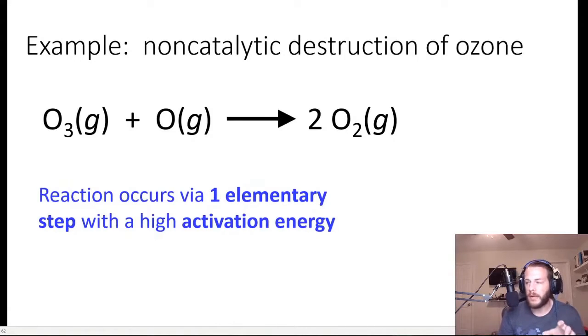Ozone, O3, is a component of the upper atmosphere, and it gets destroyed naturally according to this equation where you have a molecule of O3 colliding with an individual oxygen atom to produce two O2 molecules. So it occurs via one elementary step. And you might think, oh no, the ozone is being destroyed by this reaction. Well, yeah it is, but it's occurring naturally. And this particular reaction is slow because it has a fairly high activation energy.